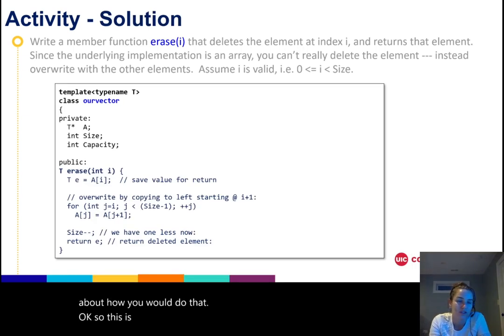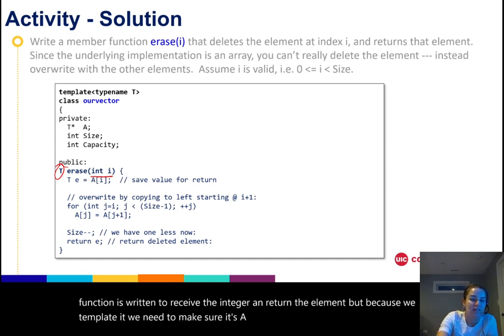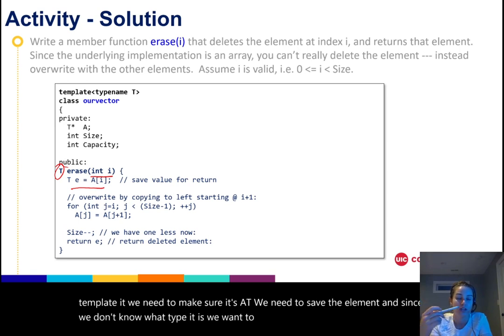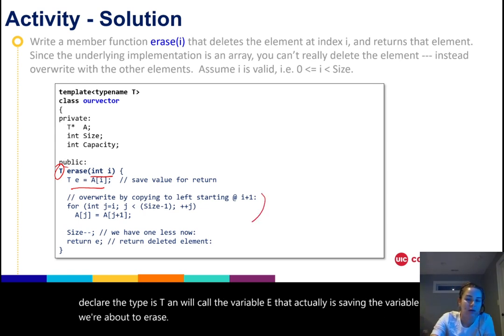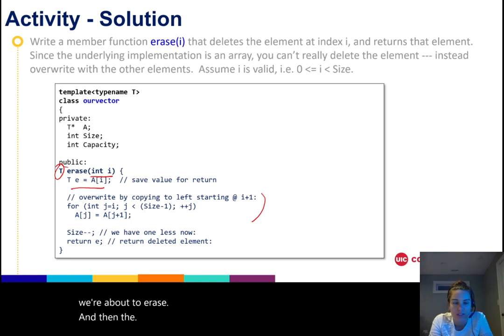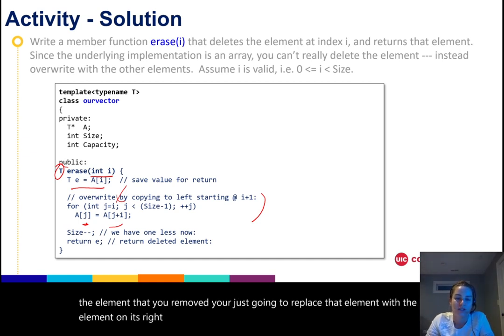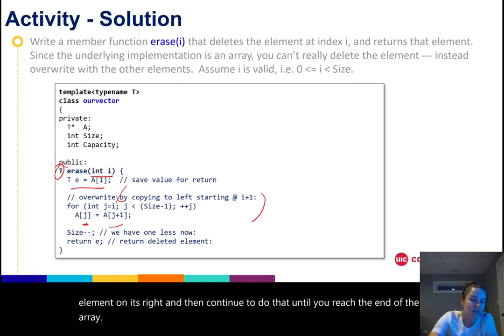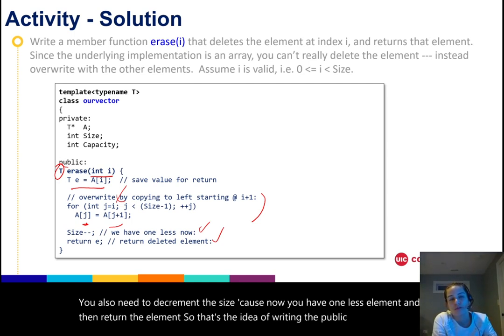Okay, so this is what a potential erase function would look like. You can see that the function is written to receive the integer and return the element. But because we templated it, we need to make sure it's a T. We need to save the element. And since we don't know what type it is, we want to make it general. We're going to declare the type as T and we'll call the variable e that actually is saving the variable we're about to erase. And then the approach that we're using here is by just shifting the array over. Starting at the element that you removed, you're just going to replace that element with the element on its right, and then continue to do that until you reach the end of the array. You also need to decrement the size because now you have one less element and then return the element. That's the idea of writing the public member function erase for the ourvector implementation.